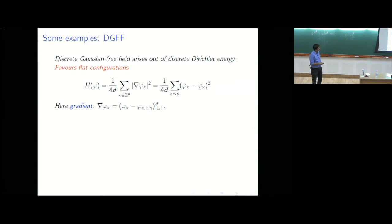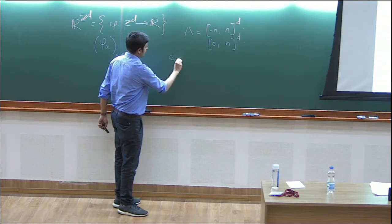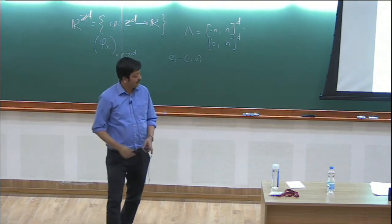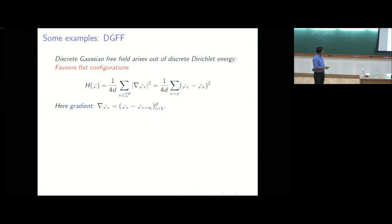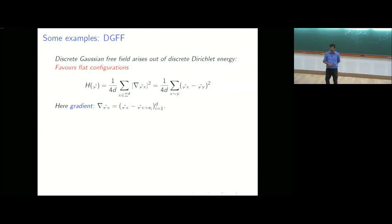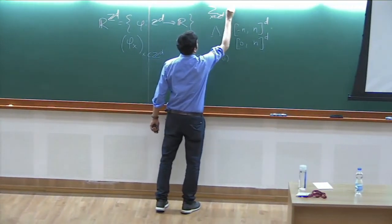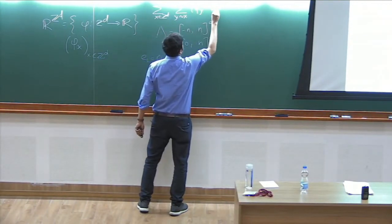For this talk, we always assume ψ_x equals zero, so it's a zero boundary condition — outside the box, the field takes the value zero. We won't go into general boundary conditions, as many issues arise there. Now we have to describe what the Hamiltonian is. For this talk we'll concentrate on three types of Hamiltonians. The first is the most popular one: in mathematics we call it the discrete Gaussian free field, DGFF in short. It arises out of the Dirichlet energy.